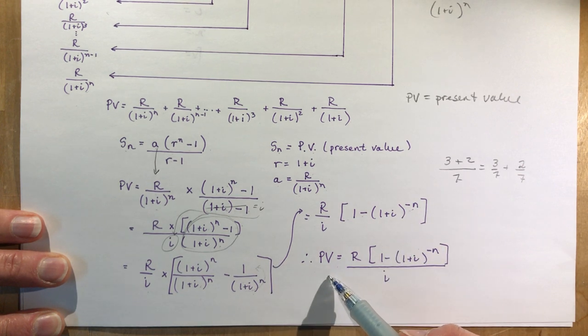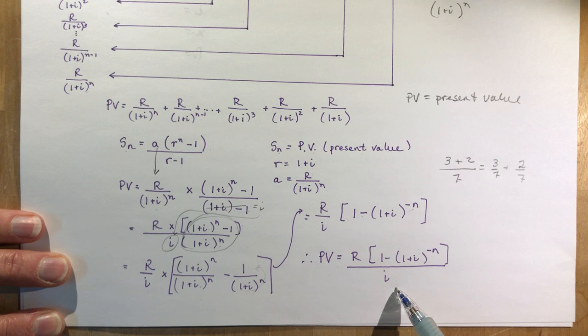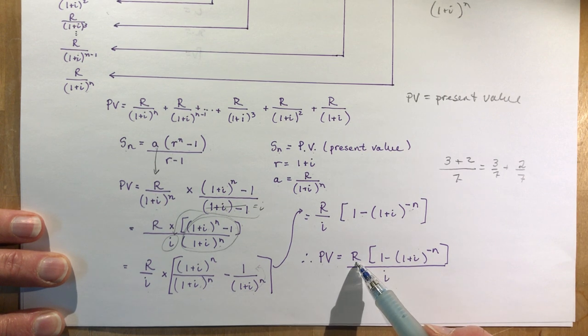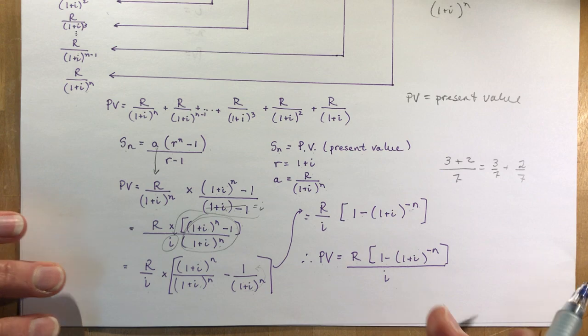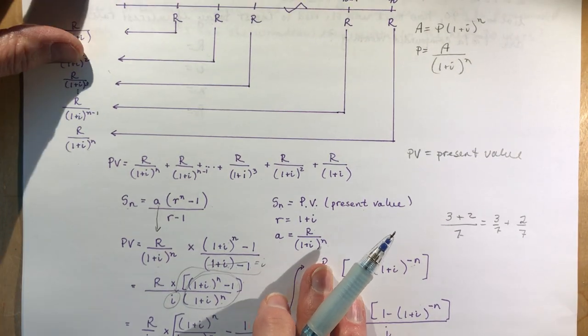So I have 1 here minus (1+i)^(-n). All I did was bring this up to the numerator which changed the sign. So there's your present value equation for an annuity: PV = R[1-(1+i)^(-n)]/i.